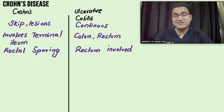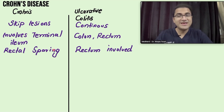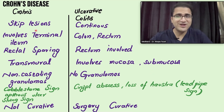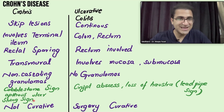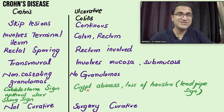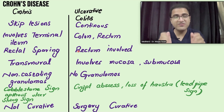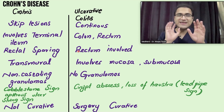Crohn's disease has skip lesions where some parts of the GI tract are spared; ulcerative colitis has continuous lesions. Crohn's disease involves the terminal ileum; ulcerative colitis involves the colon and rectum, and the rectum is almost always involved. There is rectal sparing in Crohn's disease. Crohn's disease is transmural — involving the whole thickness of the GI tract — while ulcerative colitis involves mucosa and submucosa only. Ulcerative colitis has no granulomas; Crohn's disease has non-caseating granulomas — another buzzword. Crohn's disease shows cobblestone sign, abscesses, ulcers, and string sign on radiographs; ulcerative colitis shows crypt abscesses and loss of haustra. Surgery is curative in ulcerative colitis but not in Crohn's disease.